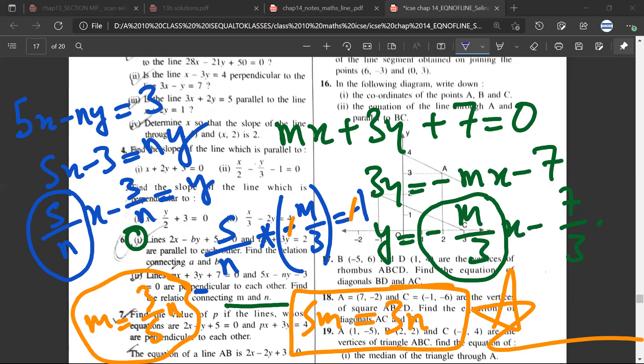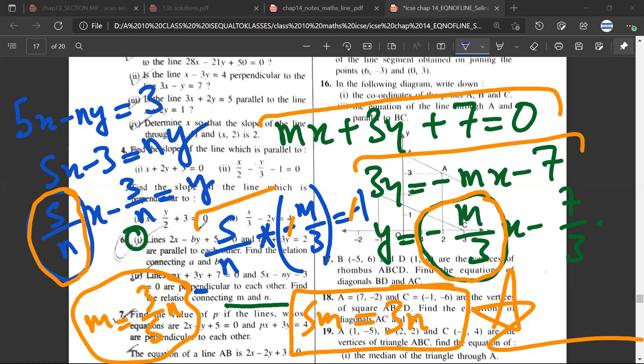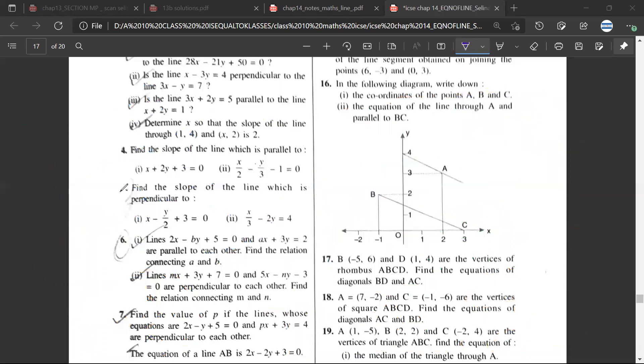You just have to practice this. You should be comfortable with basic algebra: 3y equals minus mx minus 7, so y equals minus m upon 3. This is its slope. In the same way, you set up the other equation. Because the lines are perpendicular, the product of slopes equals minus 1. The minus signs cancel, so 5m equals 3n.